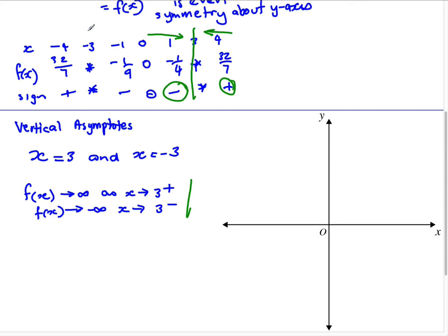So on the other side, for x is negative 3, as we come at negative 3 from the positive direction, the sign is negative. So for f(x), we'll approach negative infinity as x approaches negative 3 from the positive direction. And it approaches infinity as x approaches negative 3 from the negative direction.